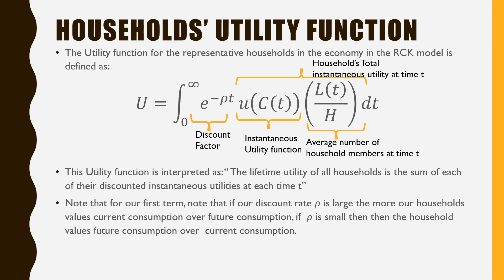The utility function for our representative households in the RCK model is defined as the integral of E raised to the power of negative rho T — our discount factor — times our instantaneous utility function U as a function of consumption at time T, times the average number of household members at time T, which is L(T), the size of our labor force, all over H, the number of households, which is a fixed number. This utility function is interpreted as the lifetime utility of all households being the sum of each of their discounted instantaneous utilities at time T.